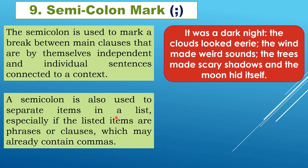The semicolon is used to separate items in a list, especially when the listed items are not single words but phrases, clauses, or groups of words. If there are groups of words, it is better to use a semicolon rather than a comma.